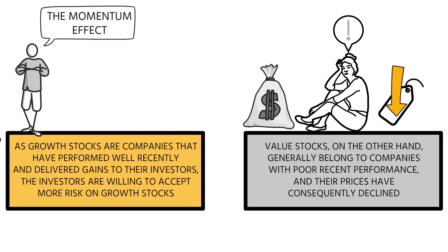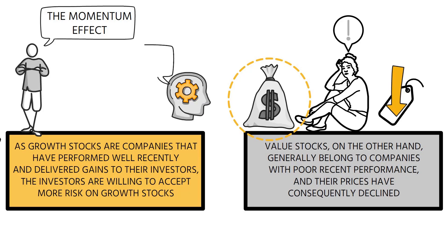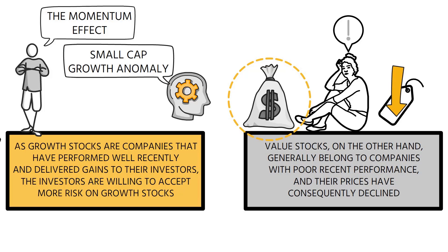This may also help explain the momentum effect, which we will discuss later. The discussion in this section helps explain the large size and persistence of the value premium. Another behavioral explanation exists that pertains to the small cap growth anomaly, which we will discuss in the next chapter.